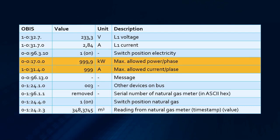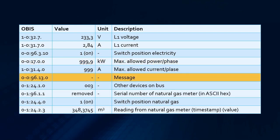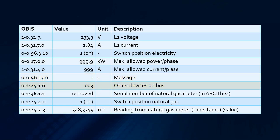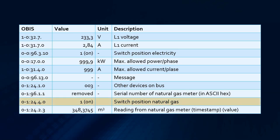There is also information about the maximum allowed power or current per phase, which suggests there can be a limitation implied by the meter. After that we can find a placeholder for a message, and then we can see the other devices present on the bus. For our natural gas meter, we first have the serial number in ASCII hex, then the switch position on or off, and finally the last reading from that natural gas meter.